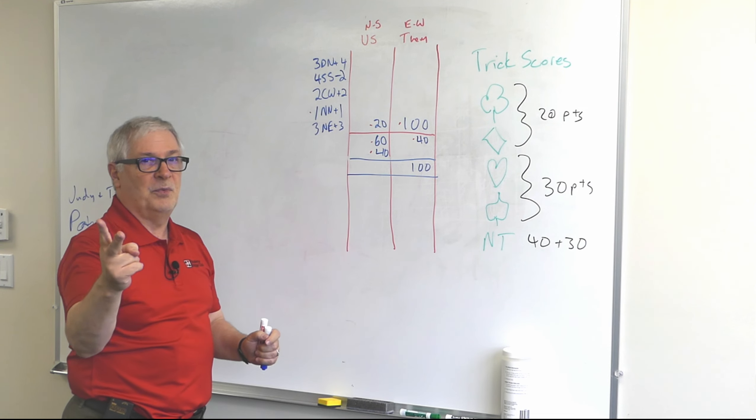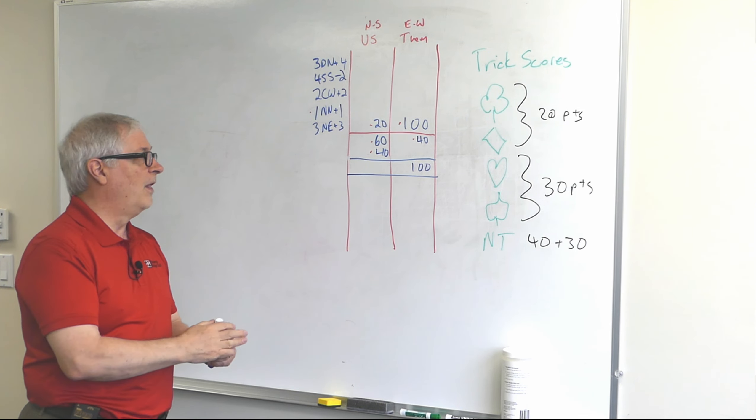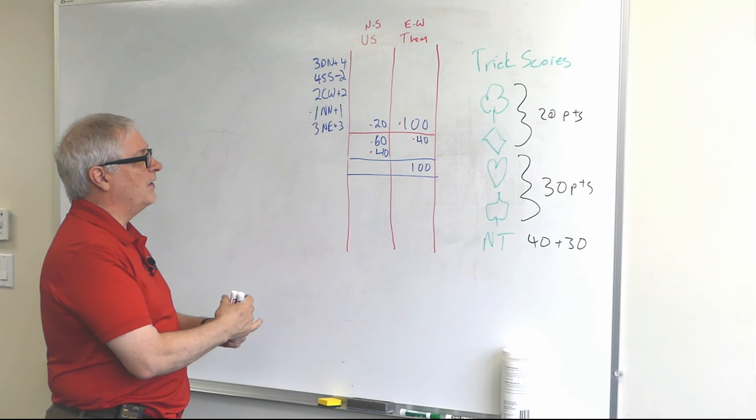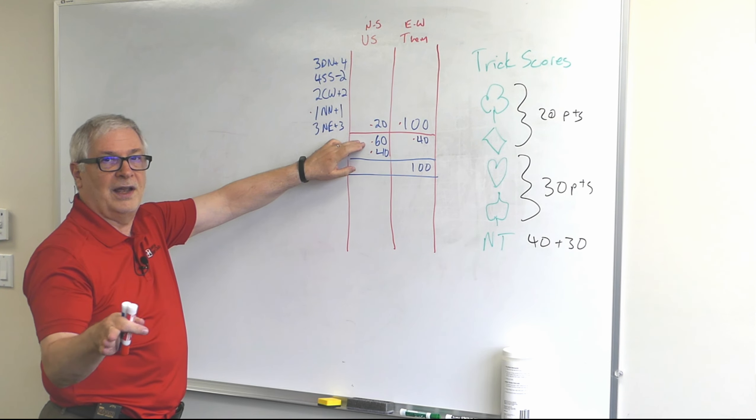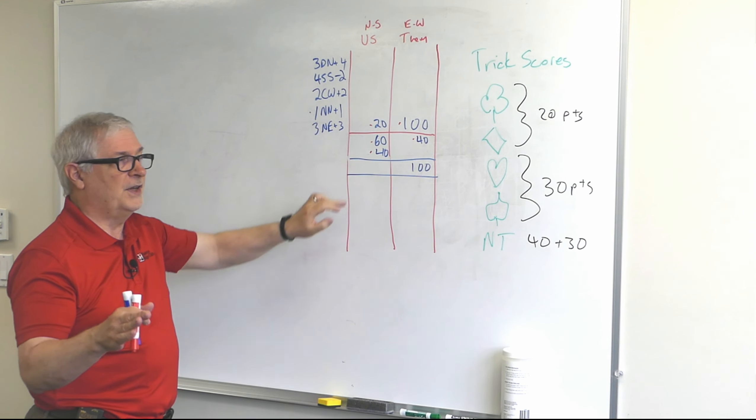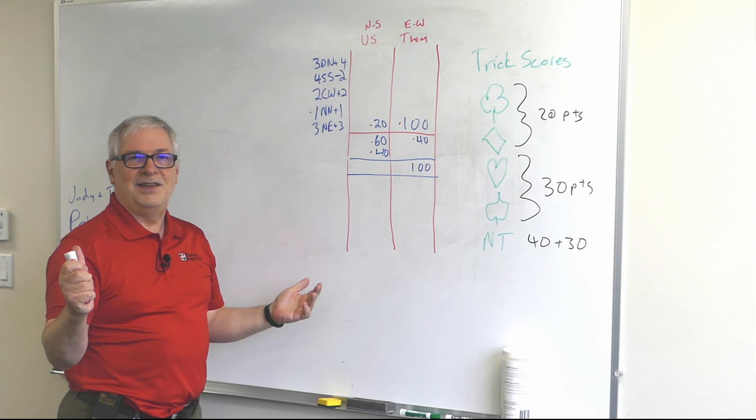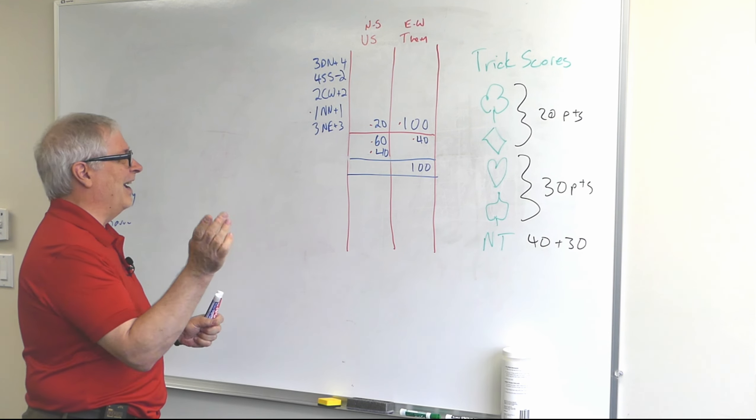We haven't won the match because you have to win two to win a rubber. To finish a rubber you have to win two. And there's another phrase that I can introduce - when a side has won one game they're said to be vulnerable. It's just a word.